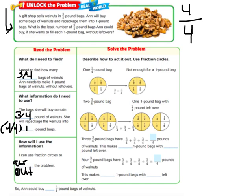We have one 3/4 pound bag looking like this. There's 3 out of the 4 sections colored in. That's not enough for a 1 pound bag. I'm missing 1/4 right here. So if I had another 3/4 pound bag, so I had 2, I would have 6 of them filled in. 3/4 plus 3/4 equals 6/4.